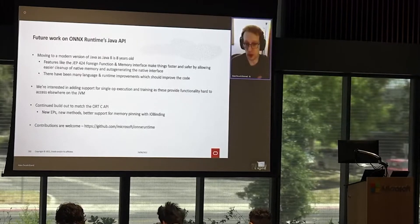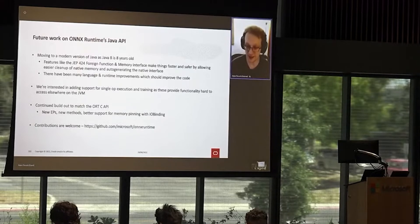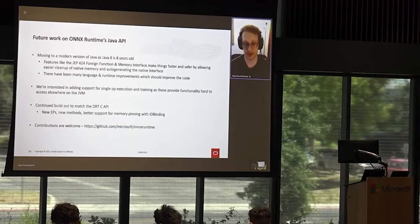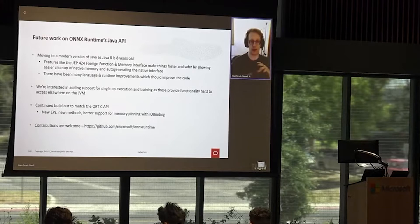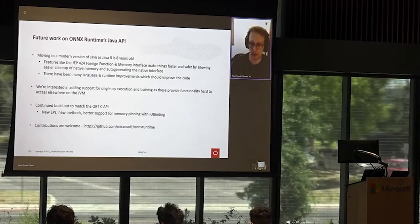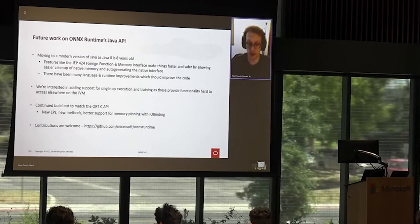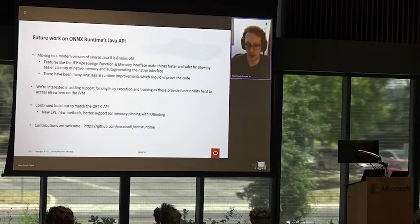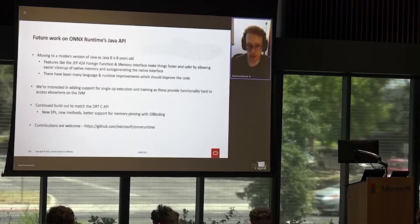Looking at where we want to go: we want to move to a more modern version of Java. Java 8 is eight years old, and there are a lot of new things in the platform that will make working with native code much easier and safer. We're also interested in adding new features coming from ONNX Runtime — recently single-op execution support was added, which would be great for driving a single matrix multiply or operation you can't easily get from the JVM. There's also work around training, which would be great to support. Contributions are welcome — this is all done upstream in Microsoft's ONNX Runtime tree.